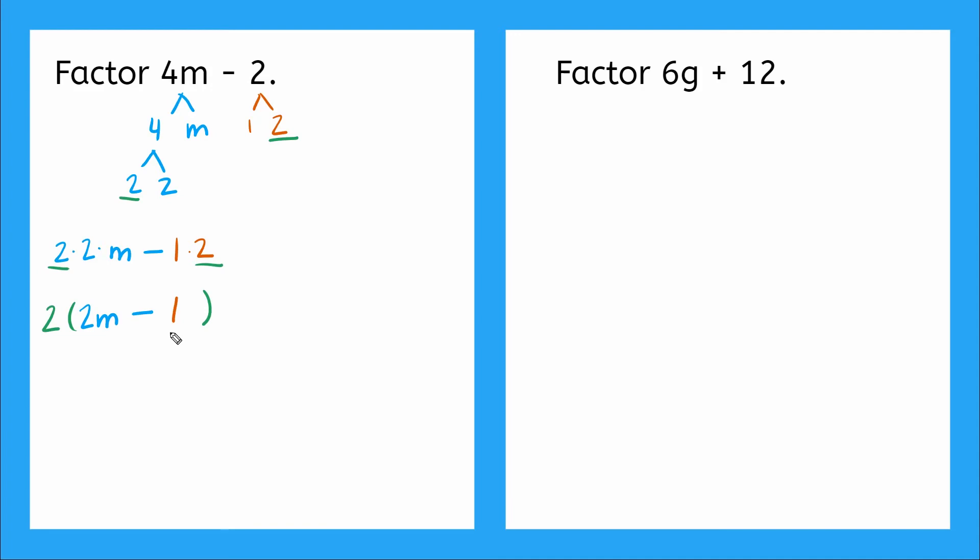I can double check and make sure I factored this right using the distributive property. So I'd have 2 times 2m, which would give me 4m minus 2 times 1, which would give me 2. I double check that expression matches that expression. So that's it. And that's the correct factored form. Nice.